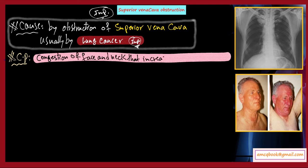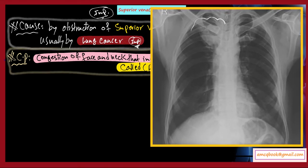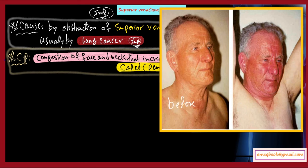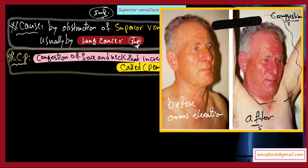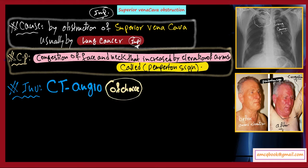The congestion of the face and neck is increased by elevation of the arms, and this is called Pemberton's sign. If you look at this X-ray, there is opacity at the apex of the lung. When you look at the patient on the left, when he elevates his arms, the patient will suffer from congestion of the face and neck — this is called Pemberton's sign. This represents superior vena cava obstruction due to lung cancer.